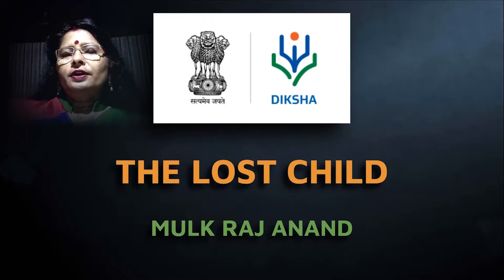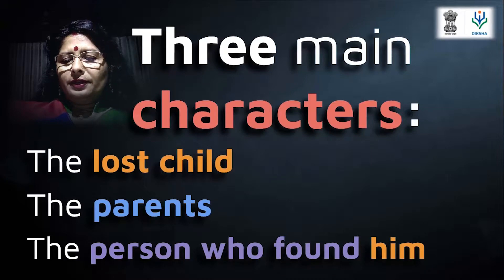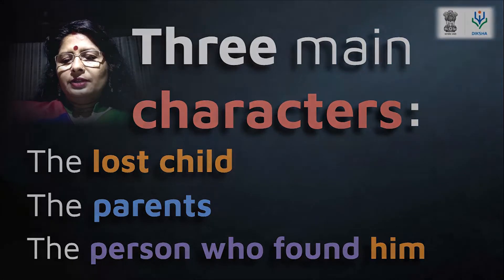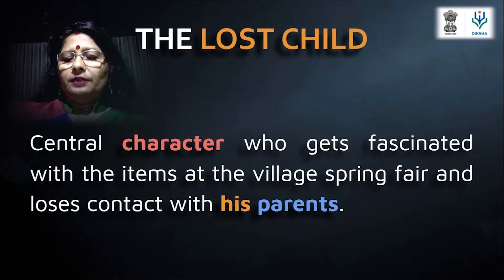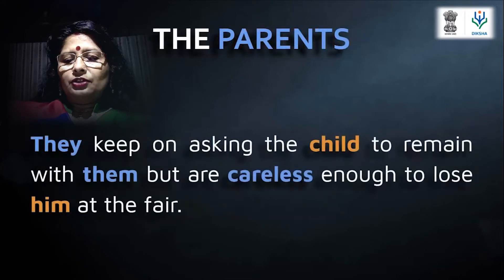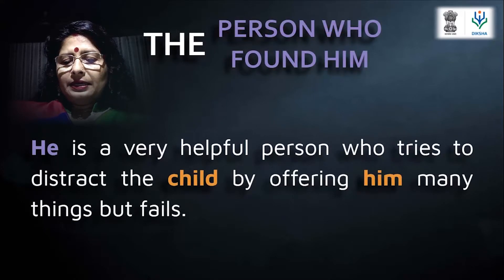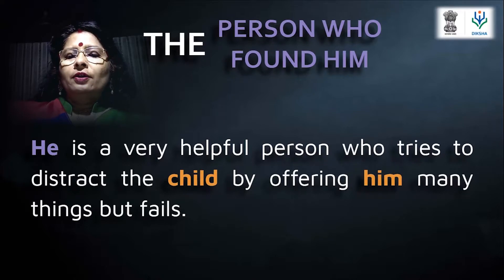This is a story of a child. There are three main characters: the lost child, who is the central character fascinated by items at the village spring fair and loses contact with his parents; the parents, who keep asking the child to stay with them but are careless enough to lose him at the fair; and the person who finds him, a very helpful person who tries to distract the child by offering many things but fails.